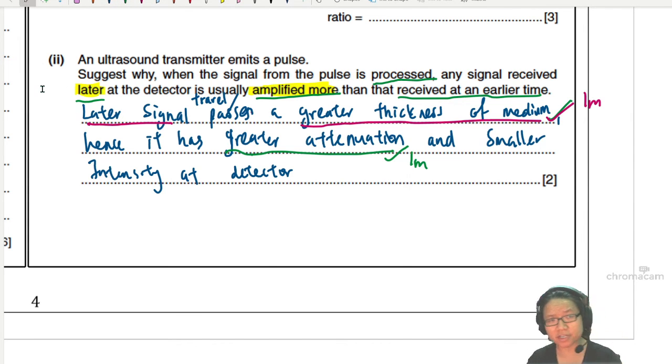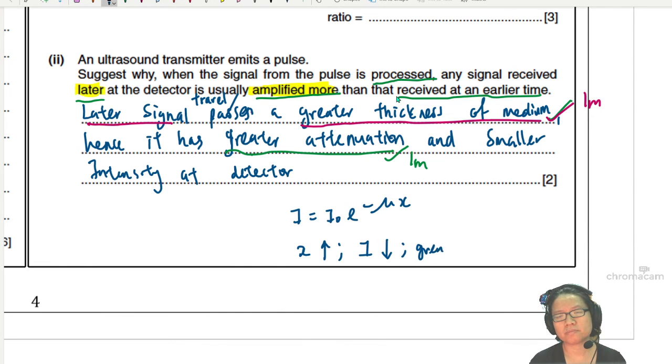So you explain the signal travel further. It travels through a greater thickness of the medium and because of traveling a greater thickness and you think about the equation, I is equal to I naught e negative mu x. When your x increase, your I decrease. So there's a greater attenuation. That would be your two marks.